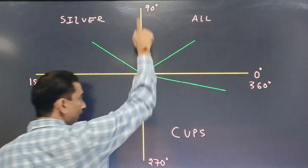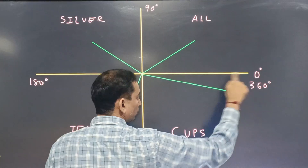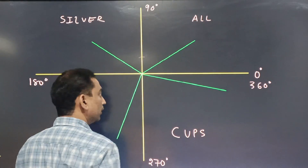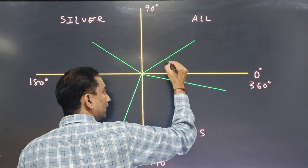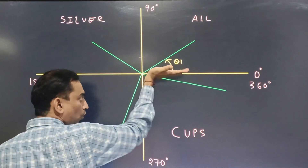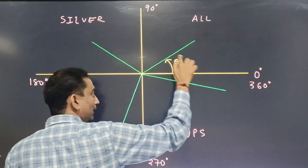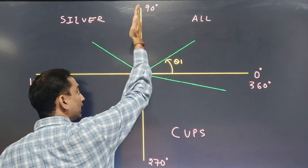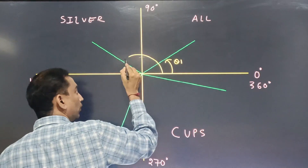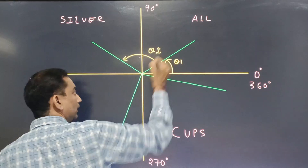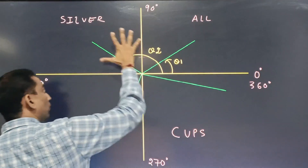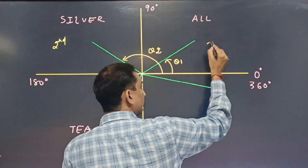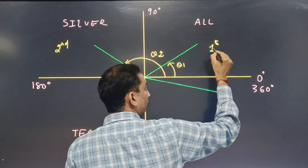We have a coordinate system. This line corresponds to 0 degrees. From 0 degrees, if you go in the anti-clockwise direction, this angle theta 1 is an acute angle. At 90 degrees, if you continue further to theta 2, that angle is an obtuse angle — we call this the second quadrant. The region before 90 degrees is the first quadrant.